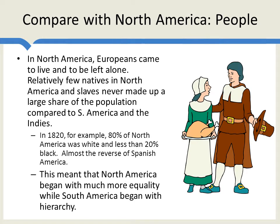Here's another factor endowment: people, or rather lack of them. Compared to Central and South America, there were actually relatively few natives in North America. And slaves, although incredibly important for the United States, never made up a large share of the population compared to South America and the Indies. So in 1820, for example, 80% of North America was white, less than 20% black — almost the reverse of Spanish America. So this meant that North America, despite inequalities particularly with the slaves, began with much more equality, while South America began with hierarchy.